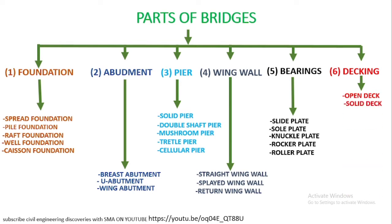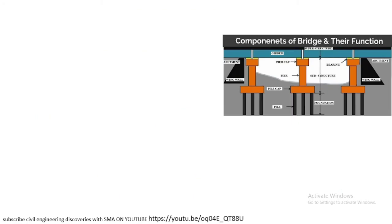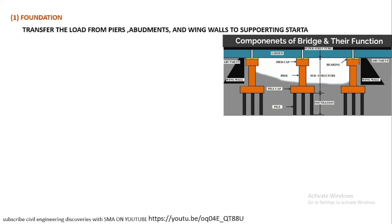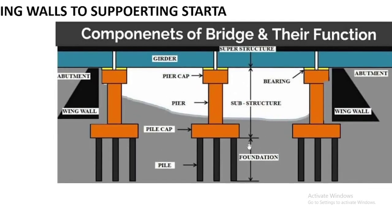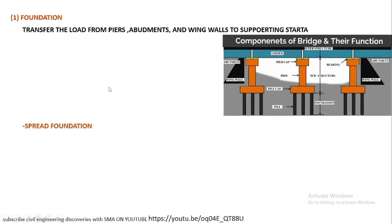Decking is classified into open deck and solid deck. Open deck is further classified into wooden floor, concrete floor, trough floor, and buckle plate. Now we will discuss in detail: foundation is basically the lowest part of the bridge. It transfers the load from pier, abutment, and wing wall to the supporting strata. The part below the substructure is known as the foundation.